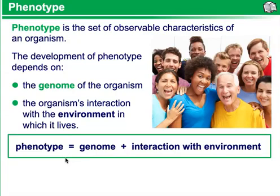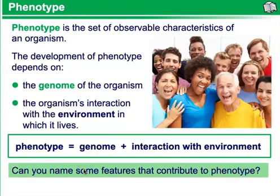The genome is the complete set of genetic material in an organism. Examples of features that contribute to a person's phenotype include eye color, hair color, height, shoe size, weight, nose shape, and a number of other characteristics. Can you name other features that contribute to phenotype?